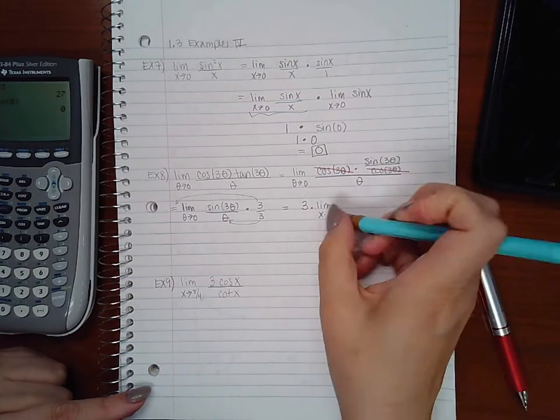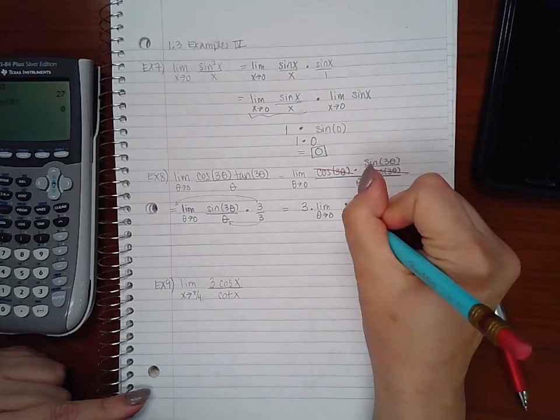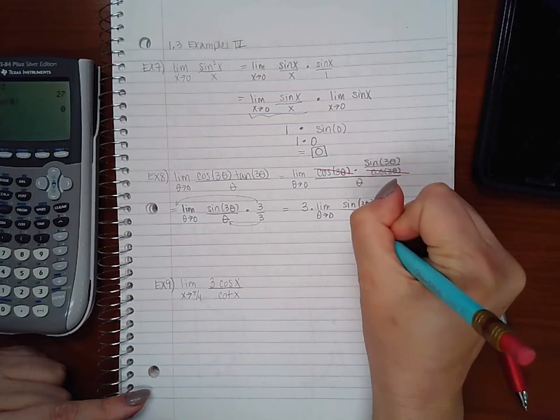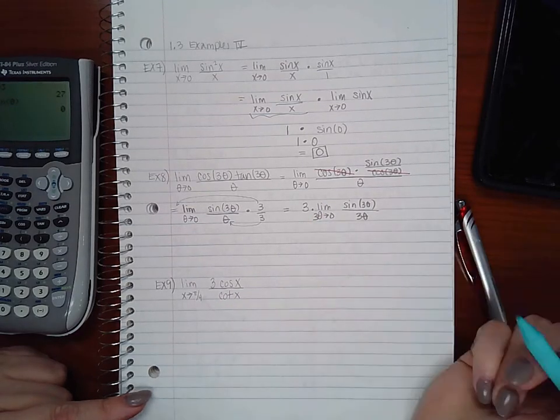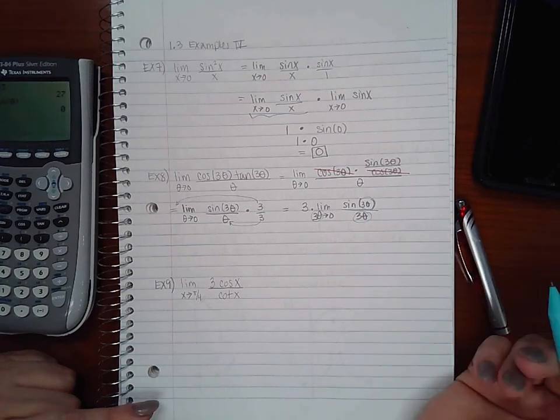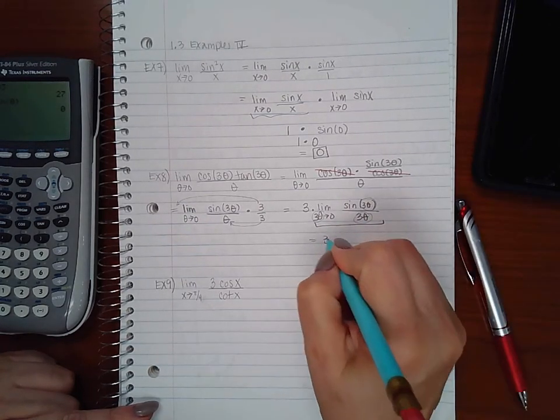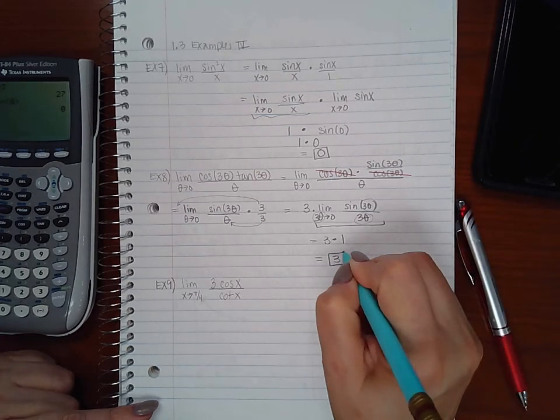Oops, I got used to putting x but it is theta going to 0. Sine of 3 theta over 3 theta. Now if theta is going to 0 so is 3 theta, and since this, this and this are all the same, this whole entire statement will just be going to 1 and 3 times 1 is just 3.